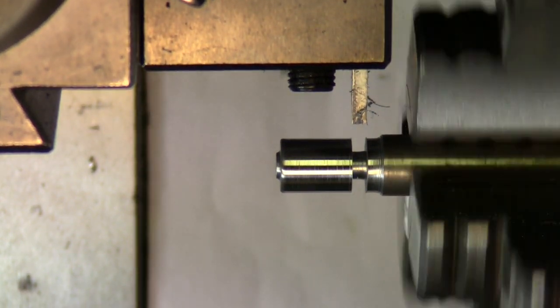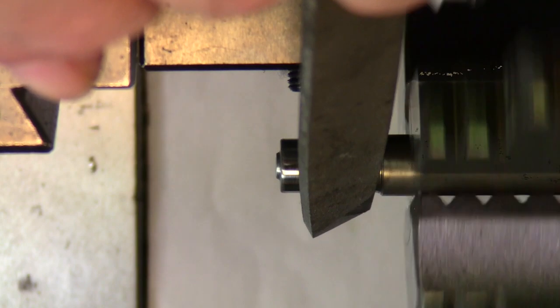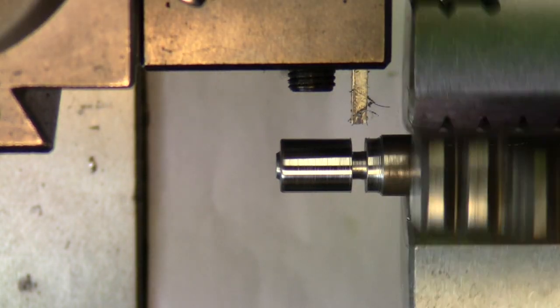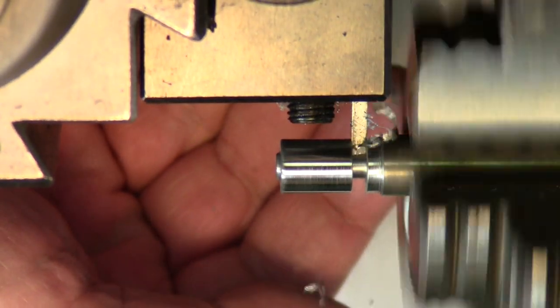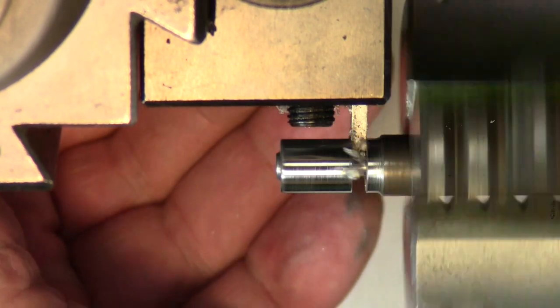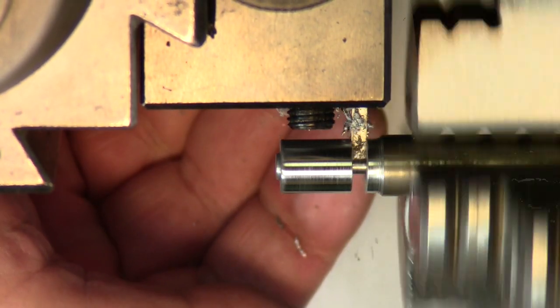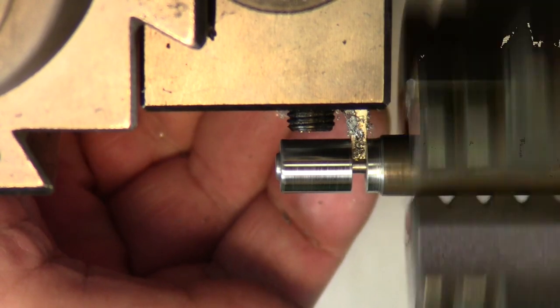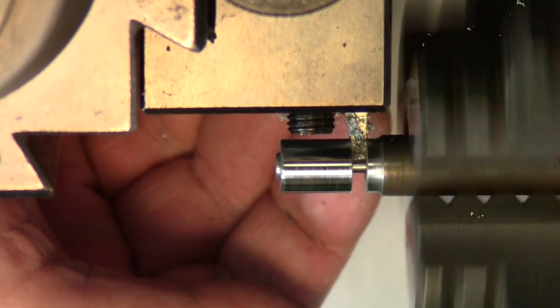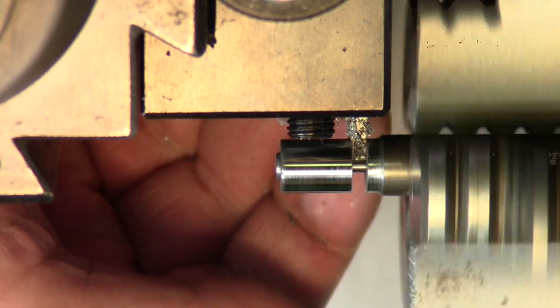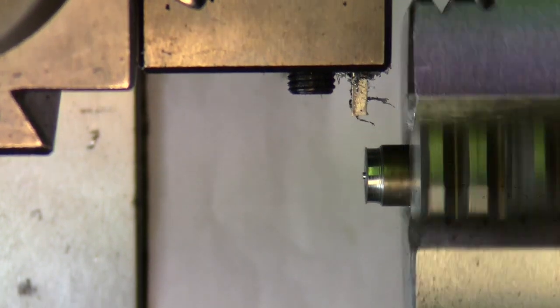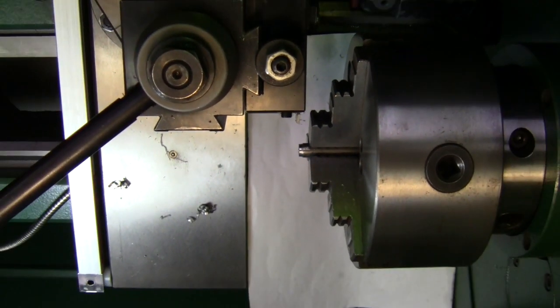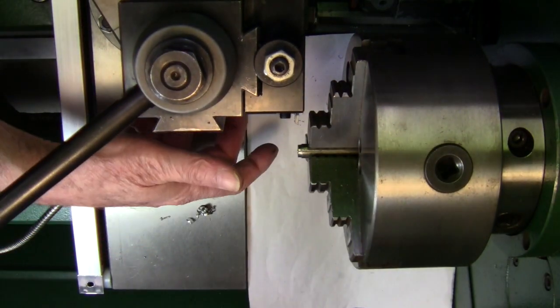Before I part it, I'll knock the burr off and finish parting. I'm at 460 plus or minus ten. Let's dig it out of here.